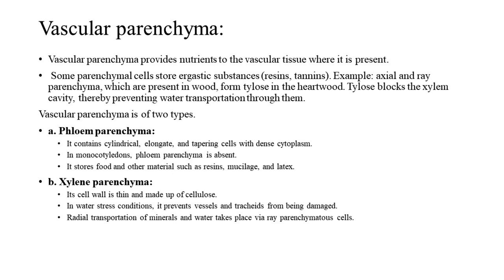Vascular parenchyma is of two types. First, phloem parenchyma, which contains cylindrical, elongate, and tapering cells with dense cytoplasm. In monocotyledons, phloem parenchyma is absent. It stores food and other materials such as resins, mucilage, and latex. Second, xylem parenchyma, whose cell wall is thin and made up of cellulose. In water stress conditions, it prevents vessels and tracheids from being damaged. Radial transportation of minerals and water takes place via ray parenchymatous cells.